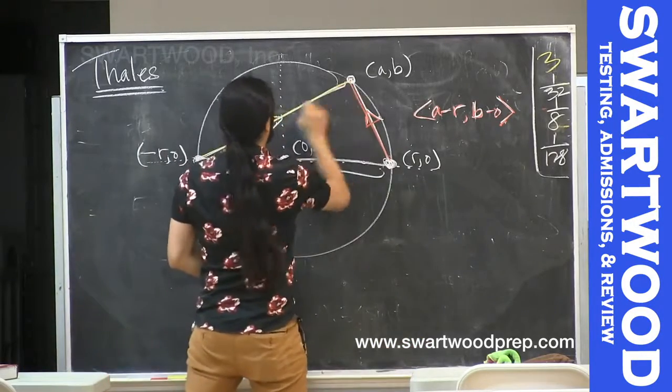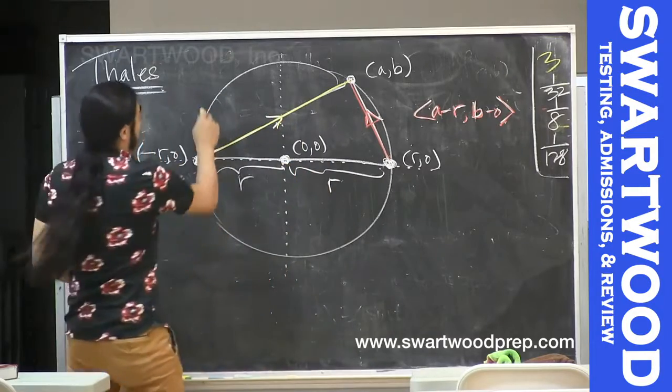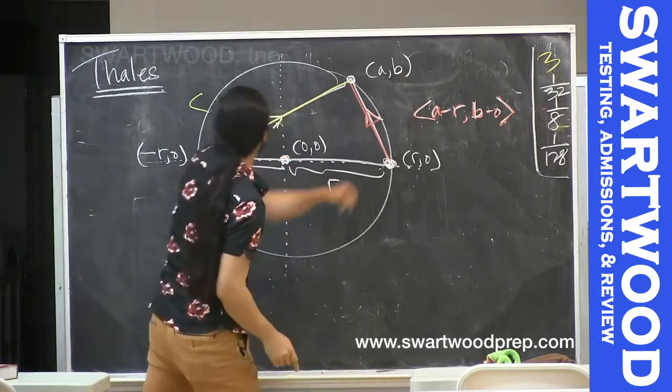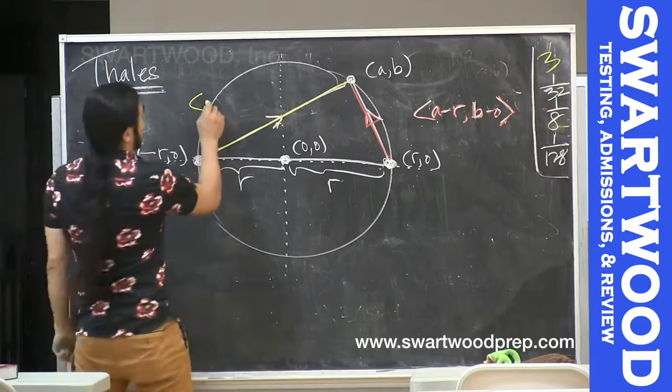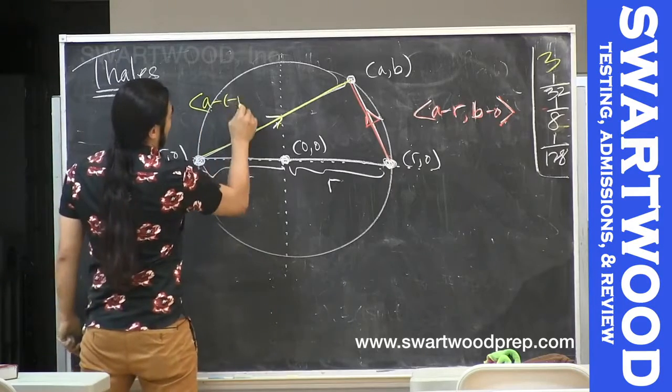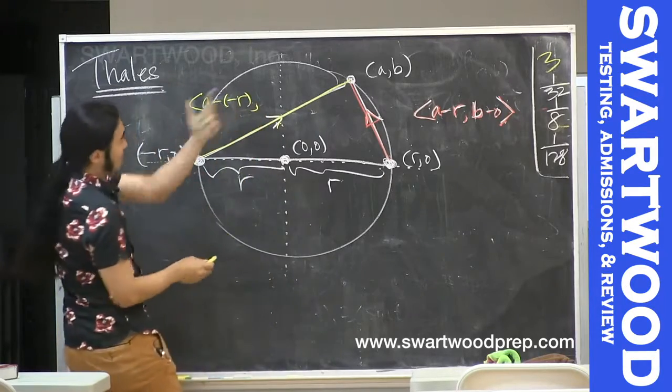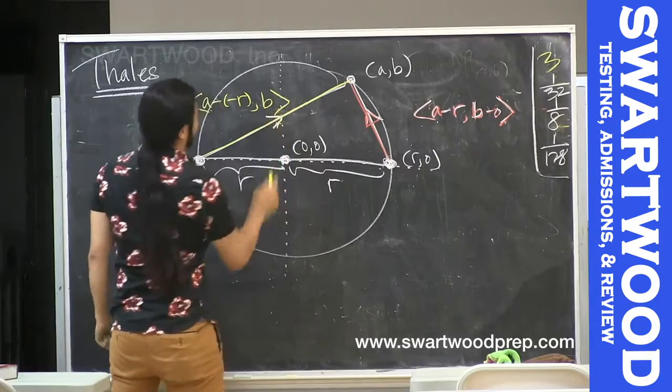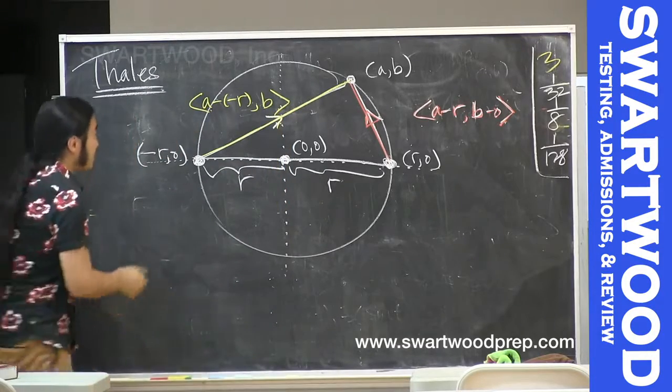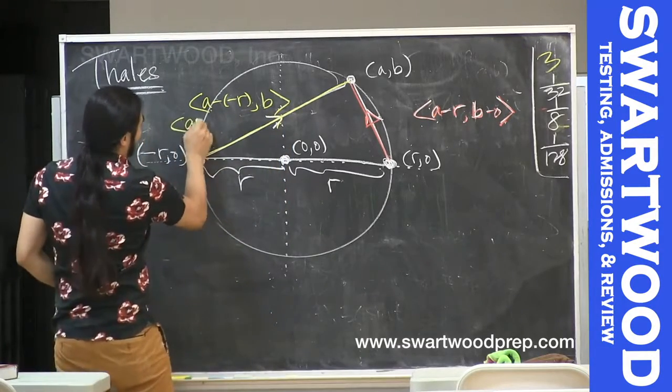Let's go for this guy. So this guy is going to be where you end up is A and B, where you start is minus R and zero. So it's going to be A minus negative R, comma B minus zero, so just B. Let's clean this up, so this is going to be A plus R and B.